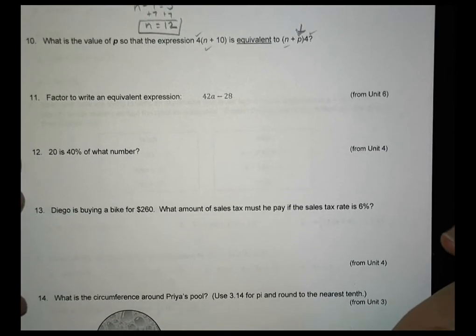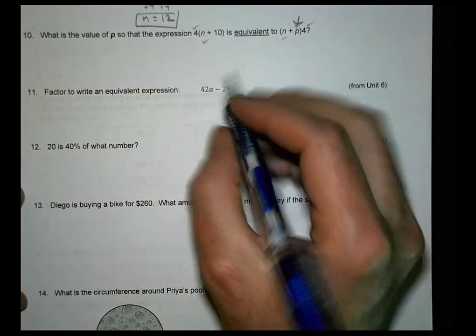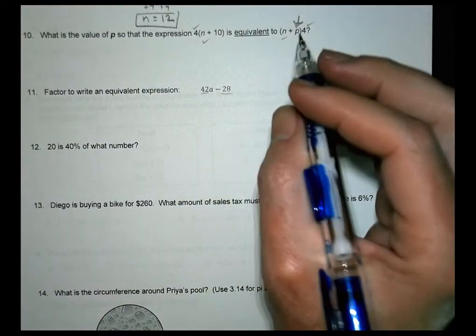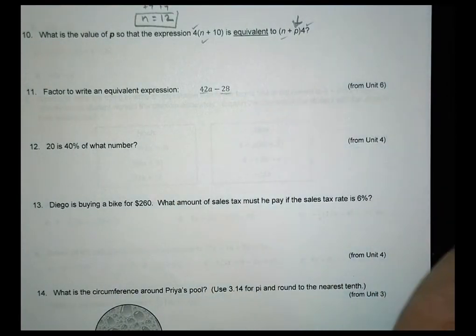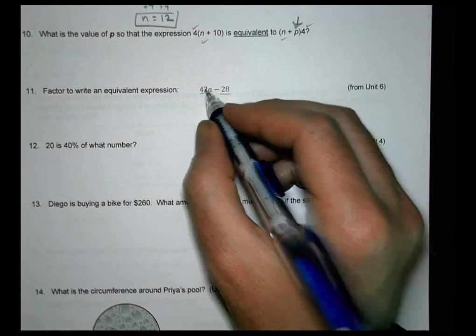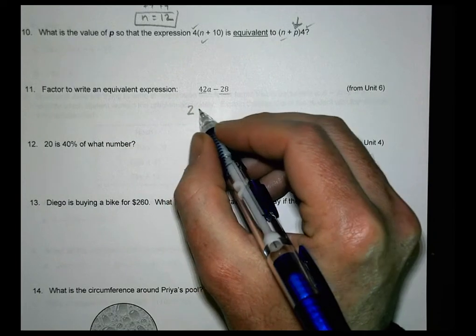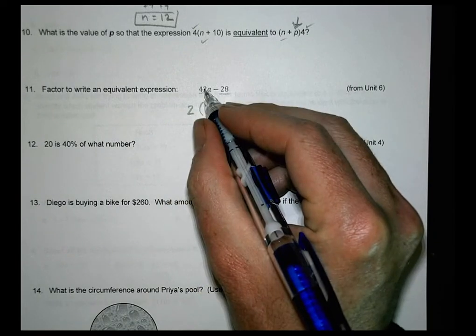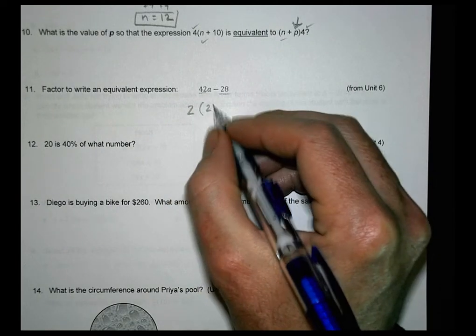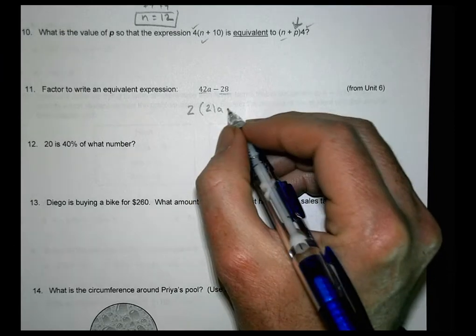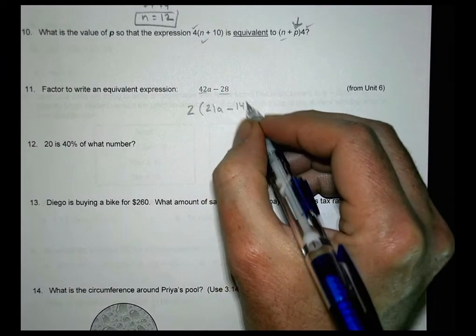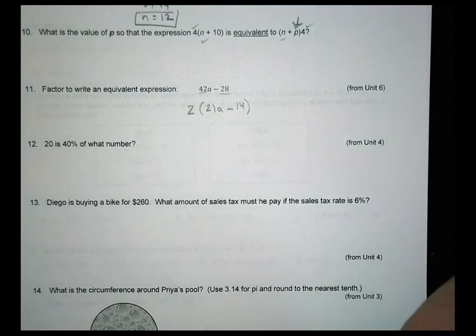All right. Number 11. Factor to write an equivalent. So what can we take out of both of these here? All right. So factoring. We know they're even. So maybe you just went with even numbers. If you thought 2 goes into there and they're both even, you could certainly take a 2 out of that. No problem. 42 divided by 2 is 21a. And 28 divided by 2 is 14. And you could leave it just like that if you wanted to. That would work.